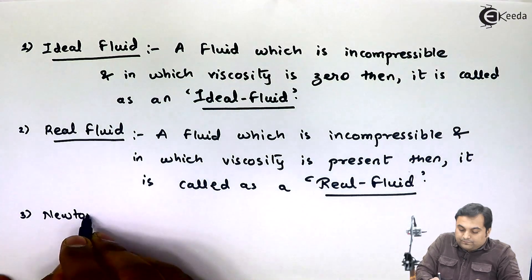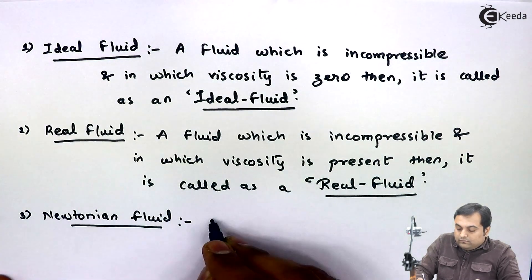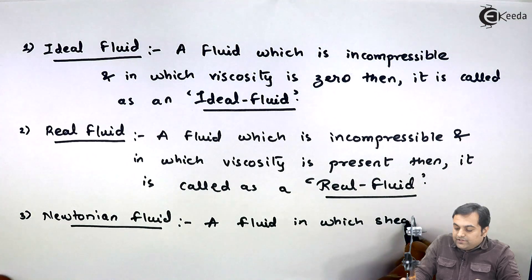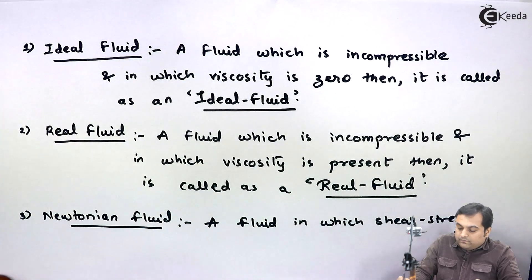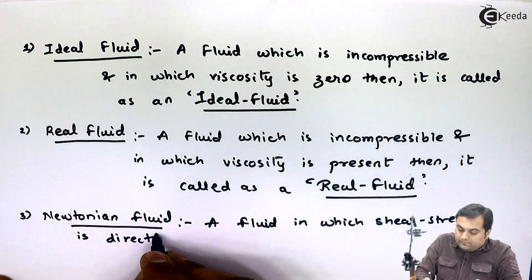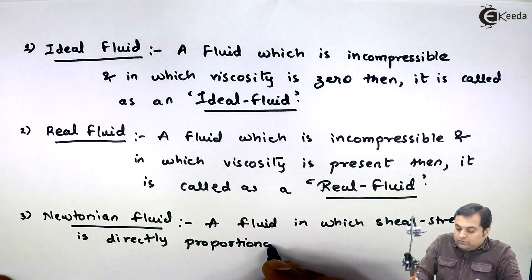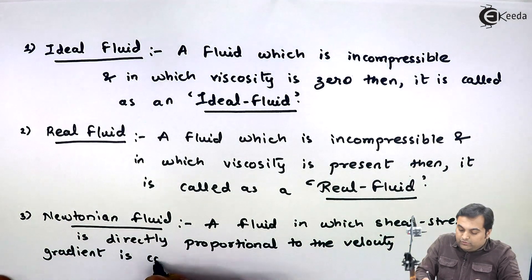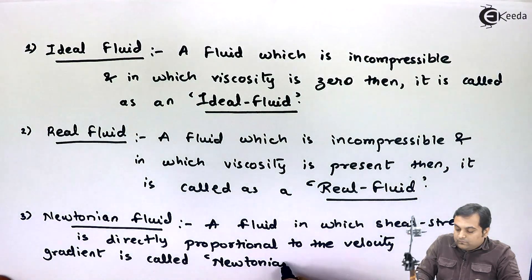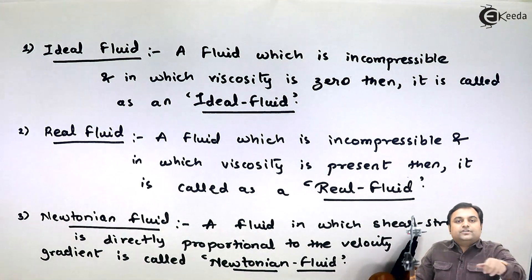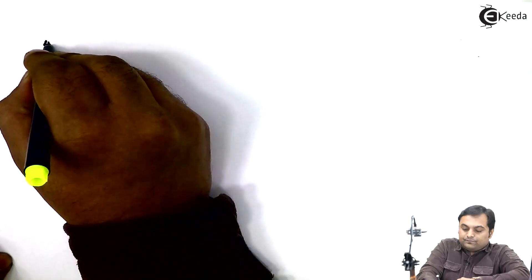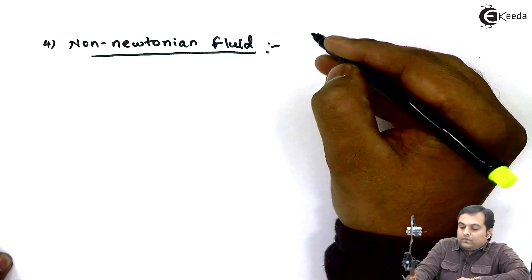Next is Newtonian fluid: a fluid in which shear stress is directly proportional to the velocity gradient is called a Newtonian fluid.